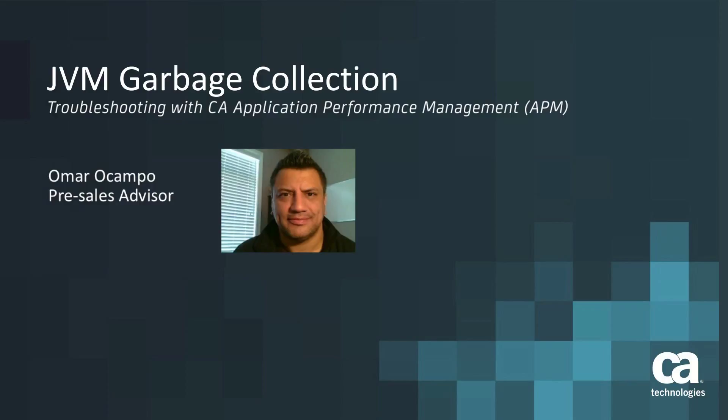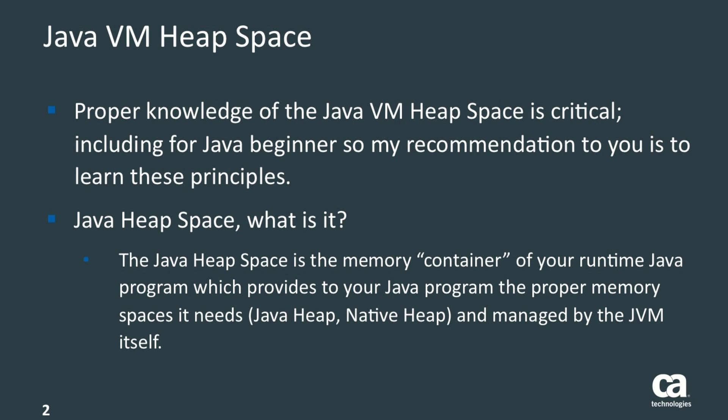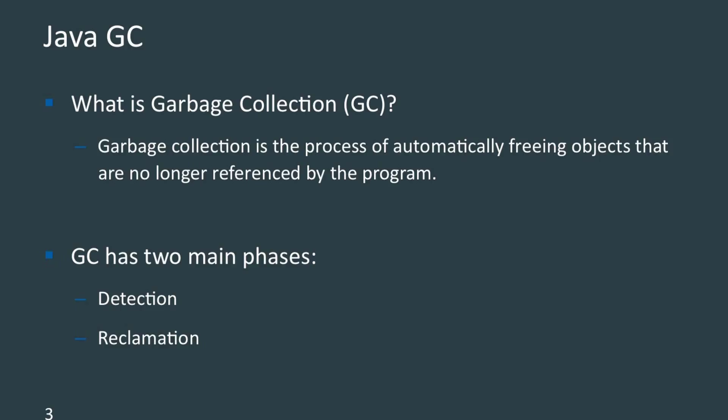Let's start by looking at how garbage collection works — a little bit of theory. We'll start with the Java heap space. Java heap space is simply a memory container where new Java objects are created. Garbage collection is a process that runs inside the JVM which automatically detects which objects are not being used anymore and therefore can be garbage collected. By 'used,' it means which objects are not being pointed to or referenced by other objects, so they can be garbage collected.